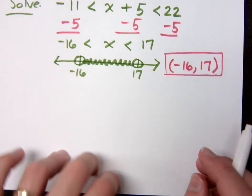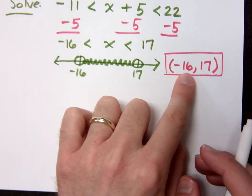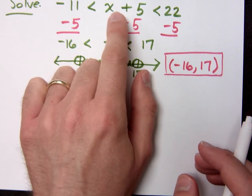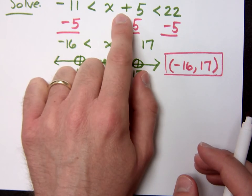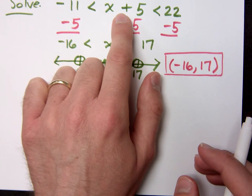That means if you were to pick anything in this interval from negative 16 to 17, you can plug it back into the original inequality and it would make it true. Questions about that one?